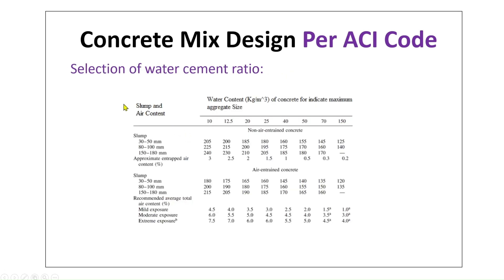Selection of water-cement ratio: this table is divided into two sections — non-air-entrained concrete (normal concrete) and air-entrained concrete. In normal cases it is non-air-entrained, and the table provides water content values according to slump ranges. For example, from 80 to 100 mm slump with a maximum aggregate size of 20 mm, we need 200 kg per cubic meter water content.